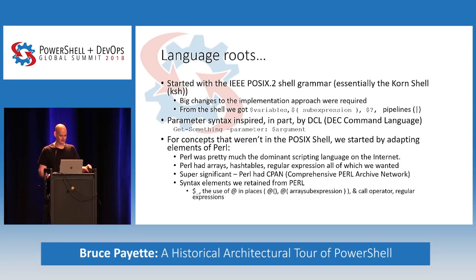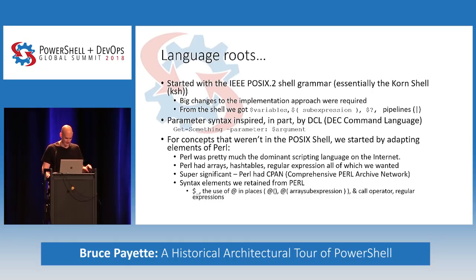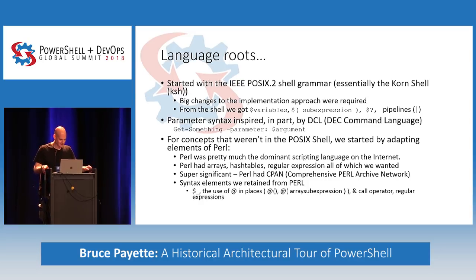The language roots: where did it start? We started with the IEEE POSIX.2 shell grammar, which is essentially the Korn shell, which is more or less bash, which all come from the Bourne shell. POSIX stood for Portable Operating System Interface with an X on the end because it sounds cool. There are big changes to the implementation though, and we tried to stick to the POSIX grammar as much as possible. We actually had a YACC grammar that we started with, and for a long time the PM was maintaining the language grammar in YACC and trying to update it.